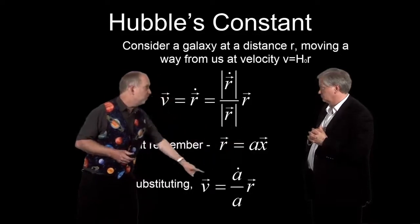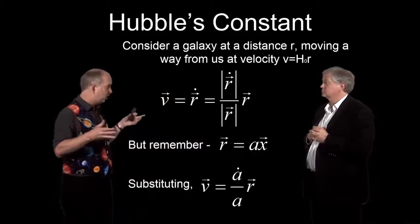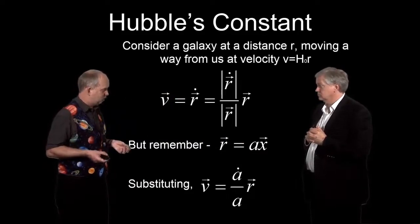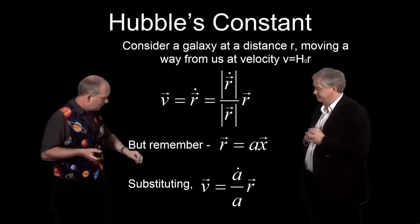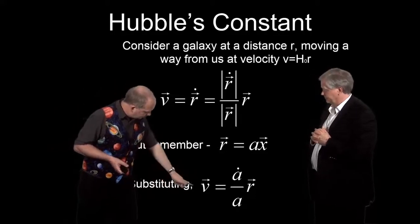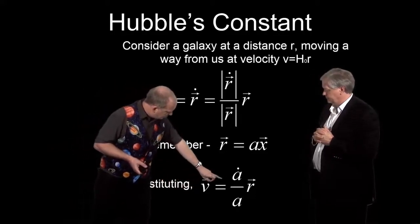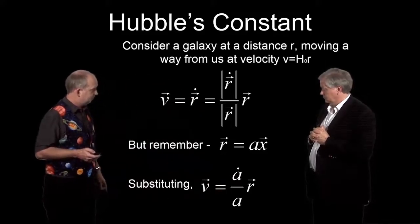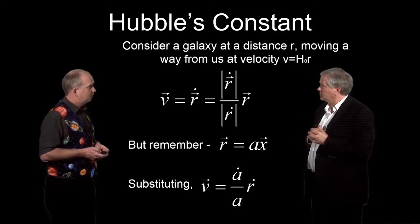x is what we call co-moving coordinates. Those are the fixed coordinates that don't change as the universe expands. But the distance something is going to change because a of t is going to change. It might get bigger, it might get smaller, we don't know yet. So what that's telling us is that the velocity is going to be given by a dot over a times the distance. So that's just the Hubble law.